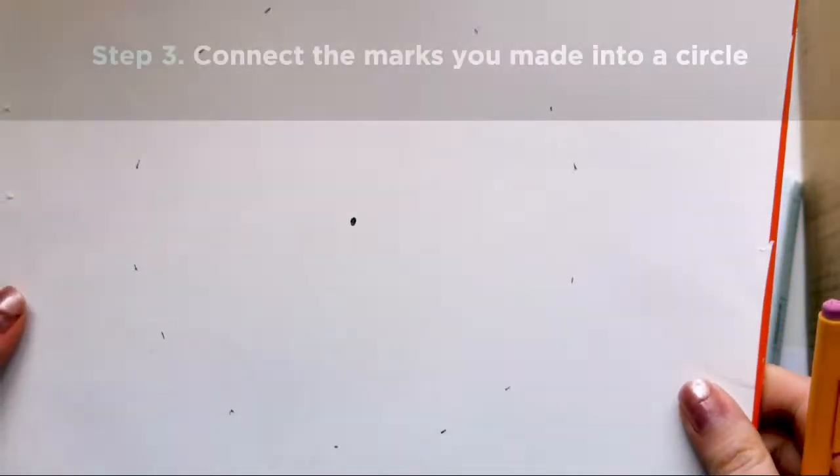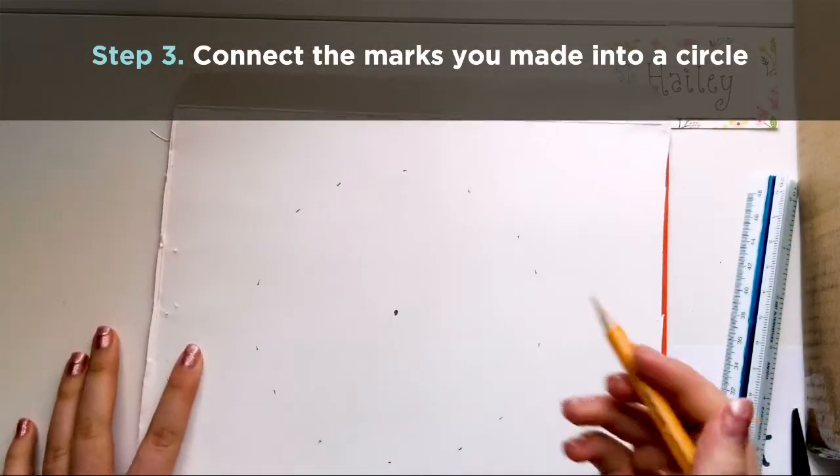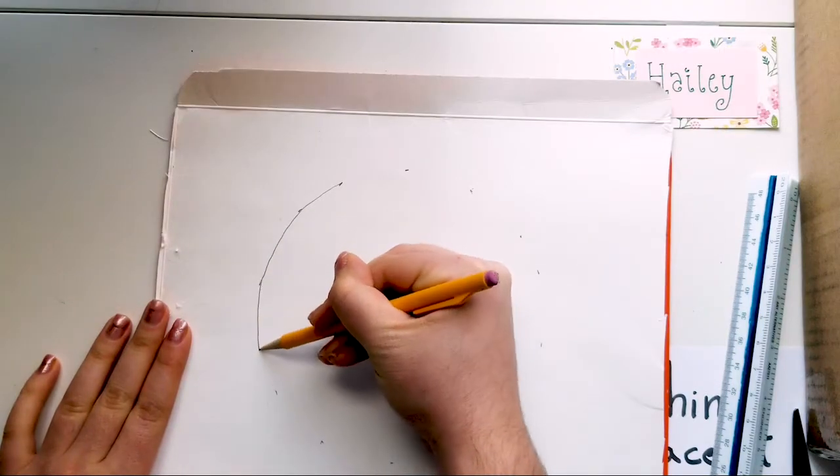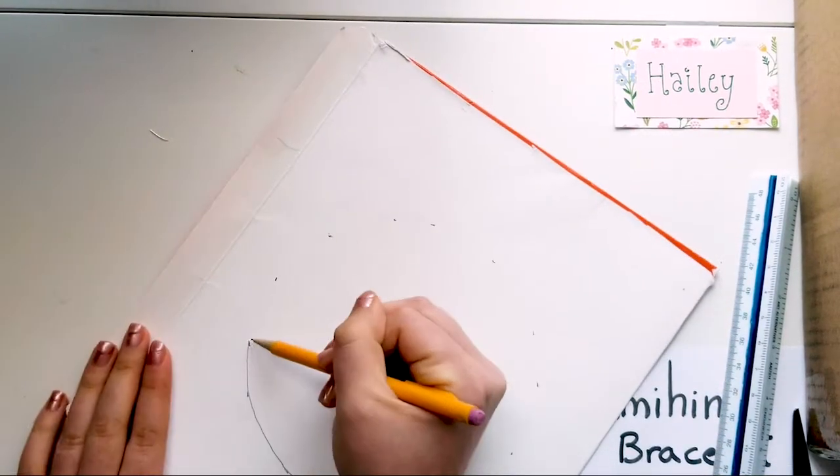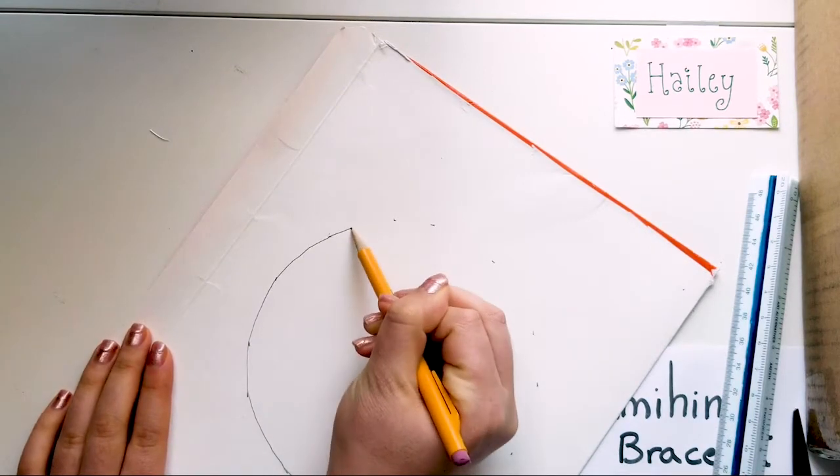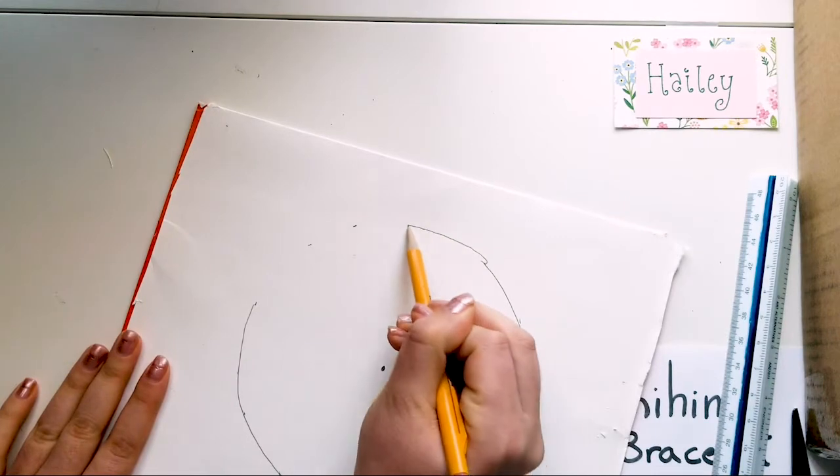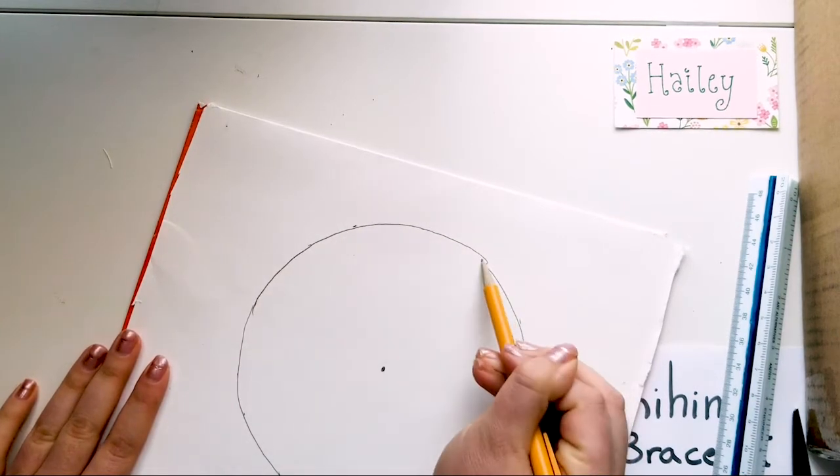So as you can see, I just made all my marks. They're in the shape of a circle. Now you're just going to connect the dots, and it doesn't have to be perfect. If you're nervous about your circle drawing you can do more dots, and that will make it easier for you to connect all of them. But I'm just going to kind of go for it, and there's my circle.